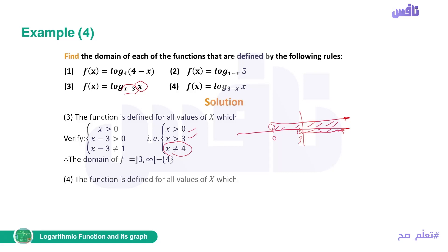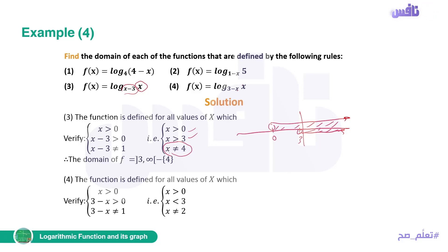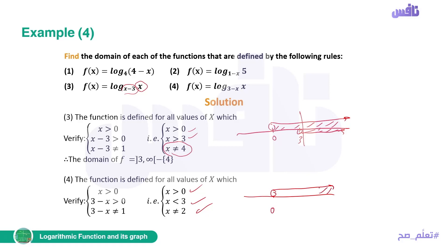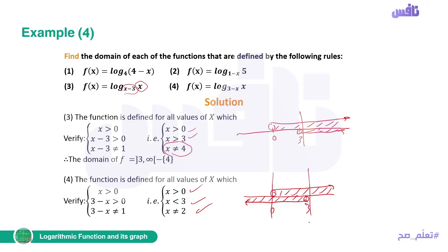Number 4: f(x) equals log base (3 minus x) of something. The base (3 minus x) must be positive: 3 minus x greater than 0, so x less than 3. Also the argument must be greater than 0, and (3 minus x) does not equal 1, so x does not equal 2. The intersection of x greater than 0 and x less than 3 gives the interval (0, 3), and excluding x equals 2, the domain equals (0, 3) except {2}.